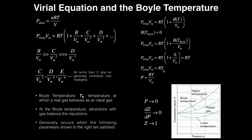You can also use a graph like this, where we have the compression factor Z plotted on the vertical axis against pressure P on the horizontal axis. You see several curves: on the top in red we have a high temperature, the green one in the middle is the Boyle temperature, and the blue one on the bottom is a low temperature.